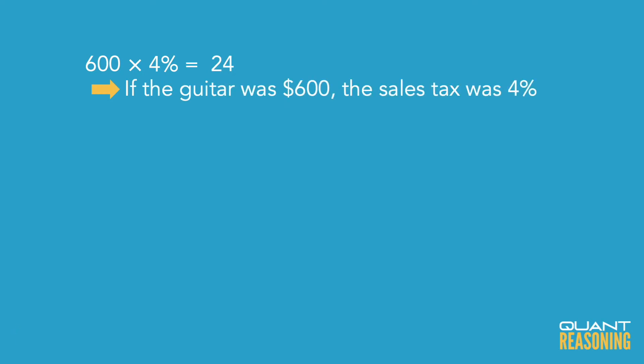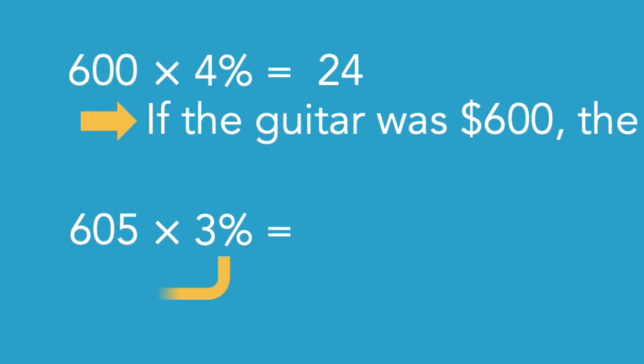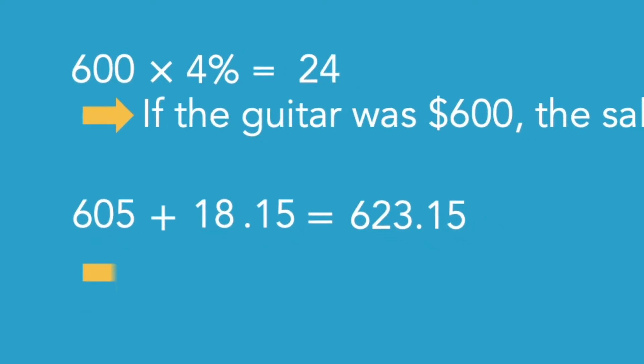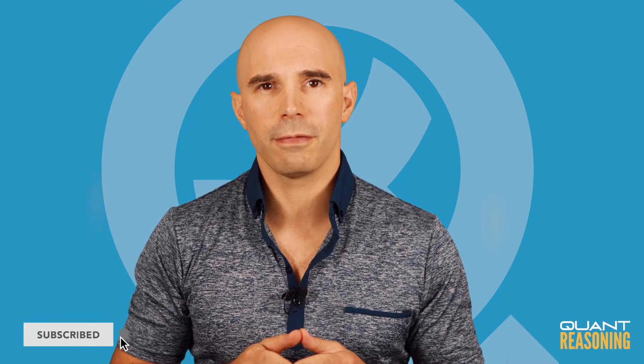I've established pretty quickly that if the price of the guitar was exactly $600, the sales tax was exactly 4%. So to find the cutoff of 3%, I need to go a bit higher than 600. Let's quickly think about $605. What's 3% of 605? It's 3 times 6 plus 3 times 5 cents — essentially $18.15. And $605 plus $18.15 is almost $624.